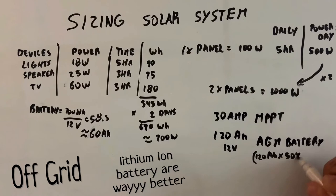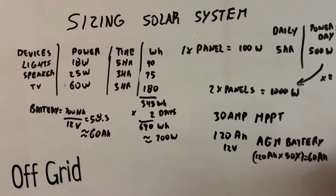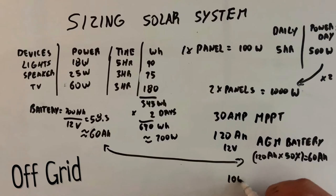If we were to use lithium batteries, we wouldn't worry so much about the depth of discharge. Because lithium can handle 80% up to 100%, but the price is expensive. So next, we're going to need two 100 watts solar panels.